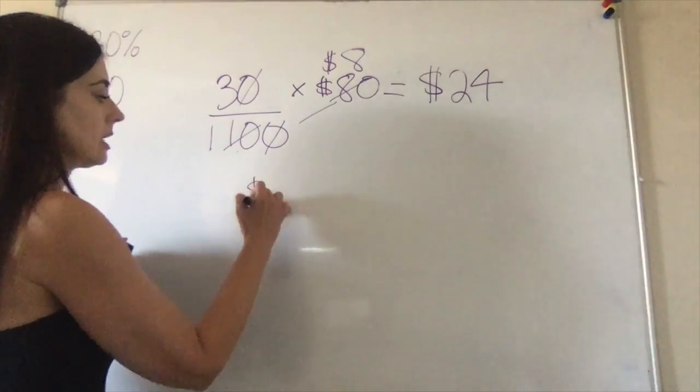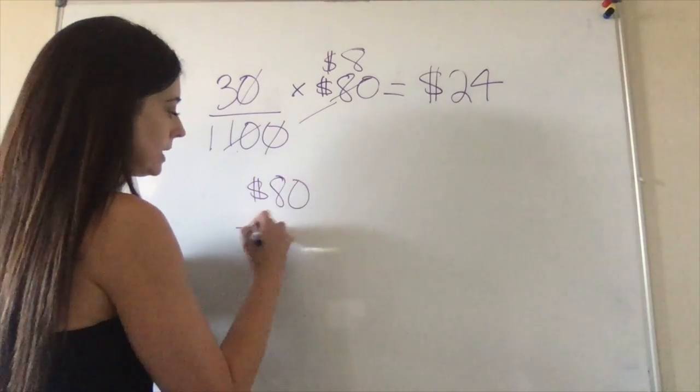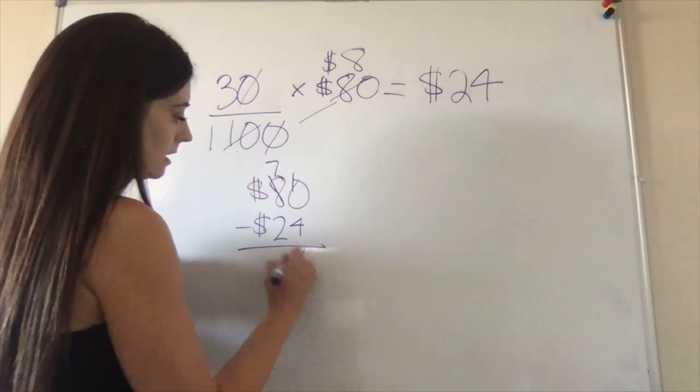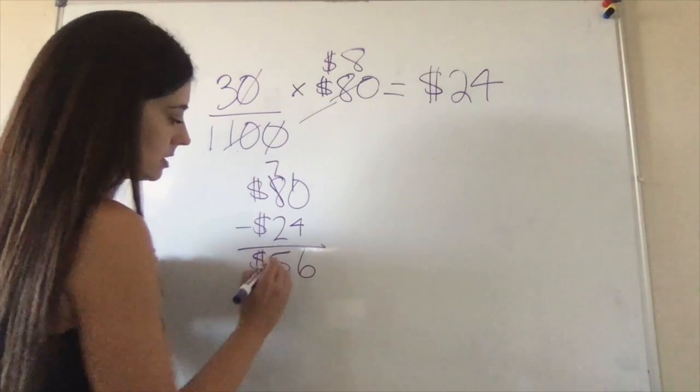So the reduction in cost, thirty percent off, is twenty-four dollars. So now we're going to take eighty dollars and we're going to subtract twenty-four dollars to find out our new selling price, and we get fifty-six dollars is the new cost. Not too bad, right?